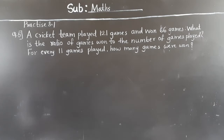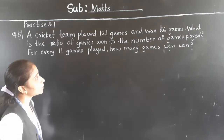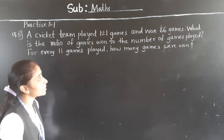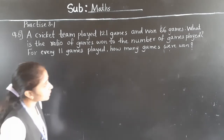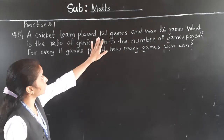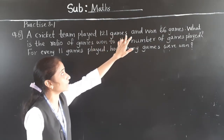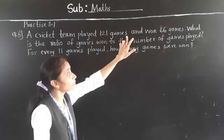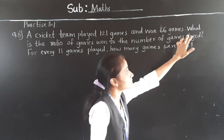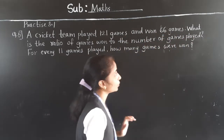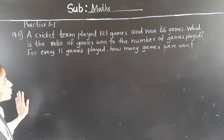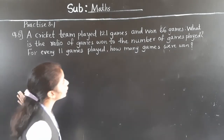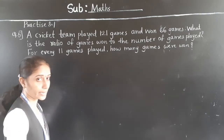A cricket team played 121 games and won 66 games. What is the ratio of games won to the number of games played?